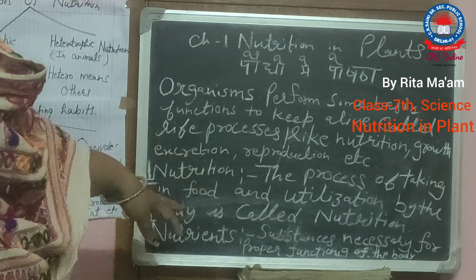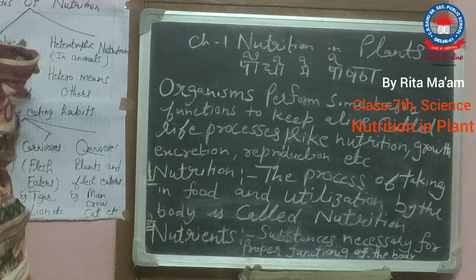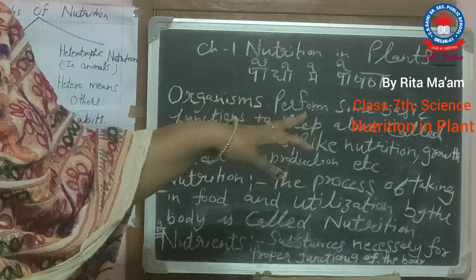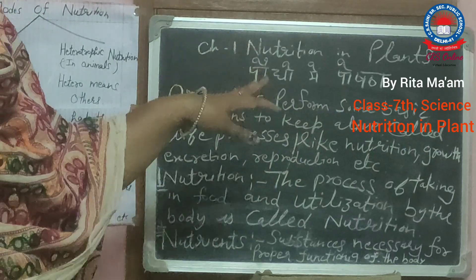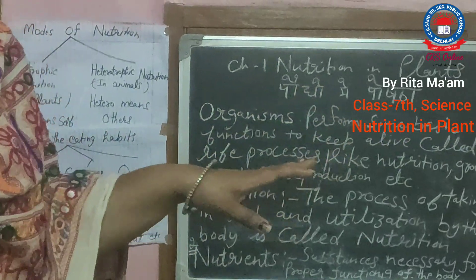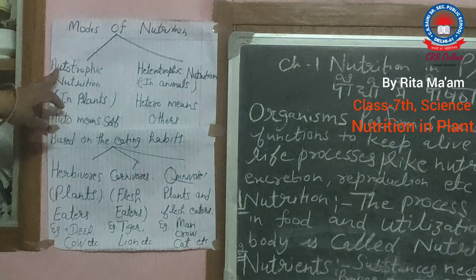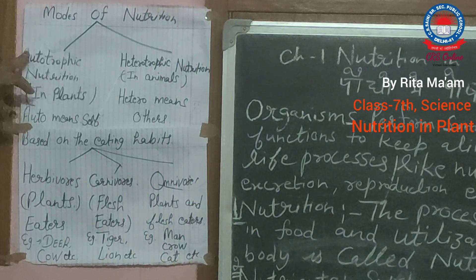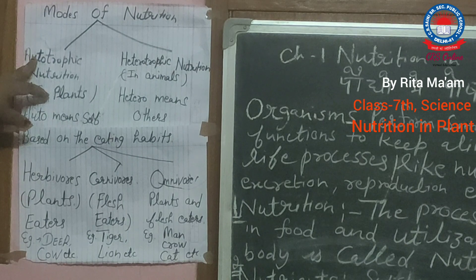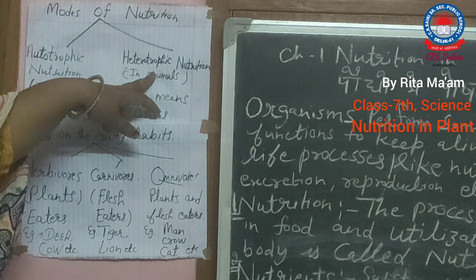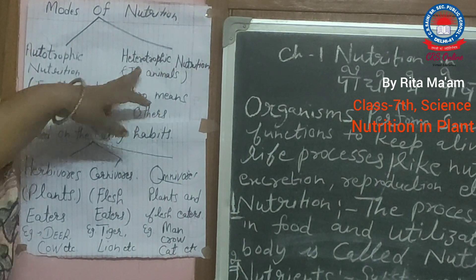Now, what is the mode of nutrition? Mode of nutrition means the type of nutrition. There are two types of nutrition: Autotrophic nutrition and Heterotrophic nutrition.